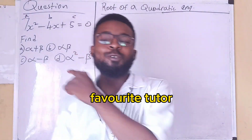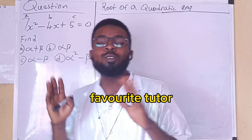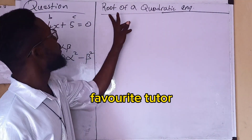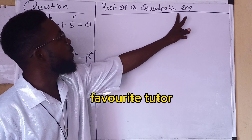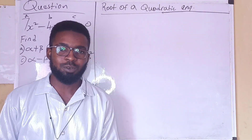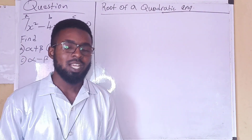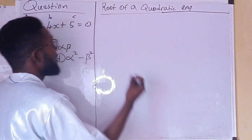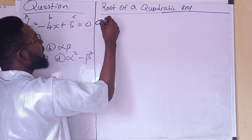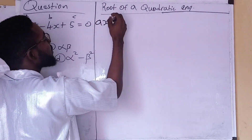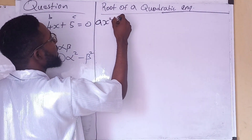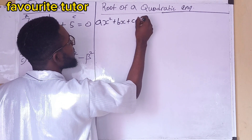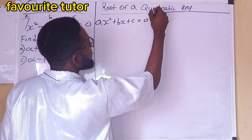But before we move into this, we need to understand the concept of the roots of a quadratic equation. Now the root of a quadratic equation — let us give you the quadratic equation ax squared plus bx plus c equals 0.